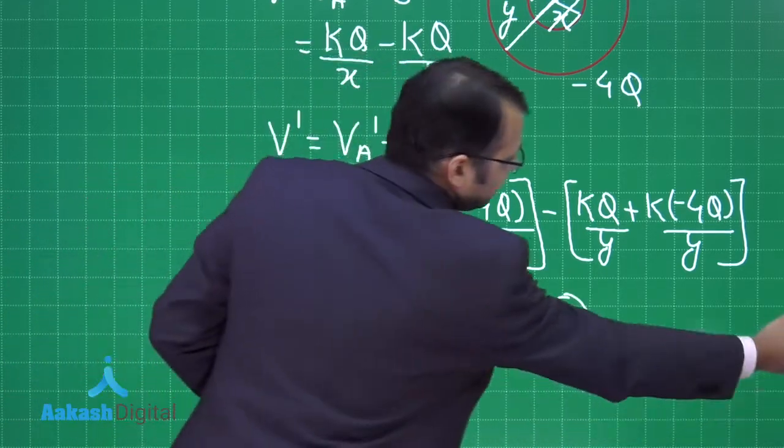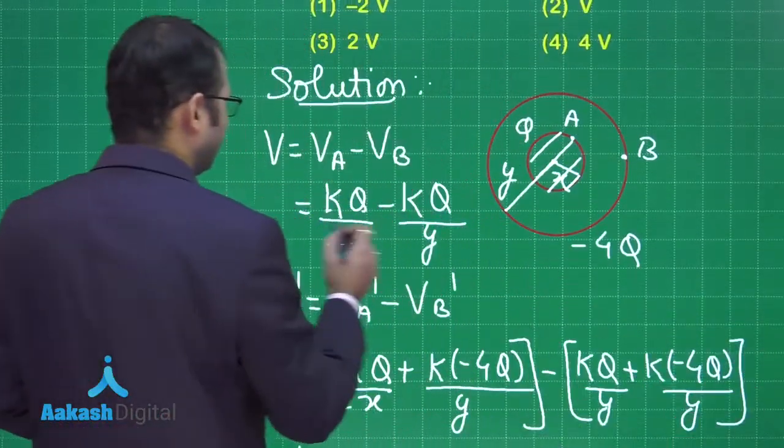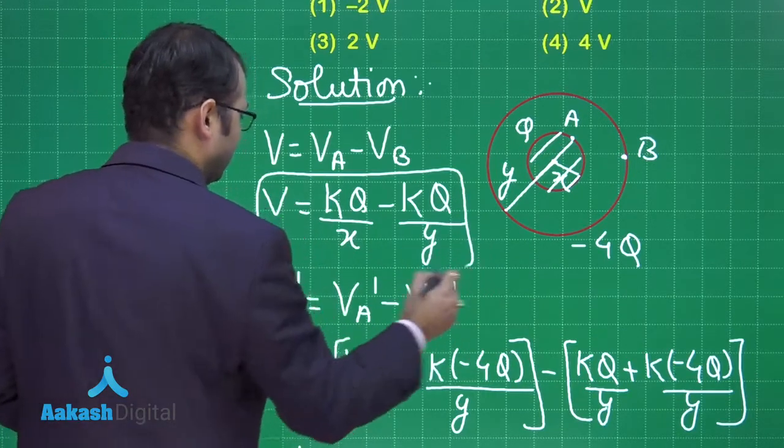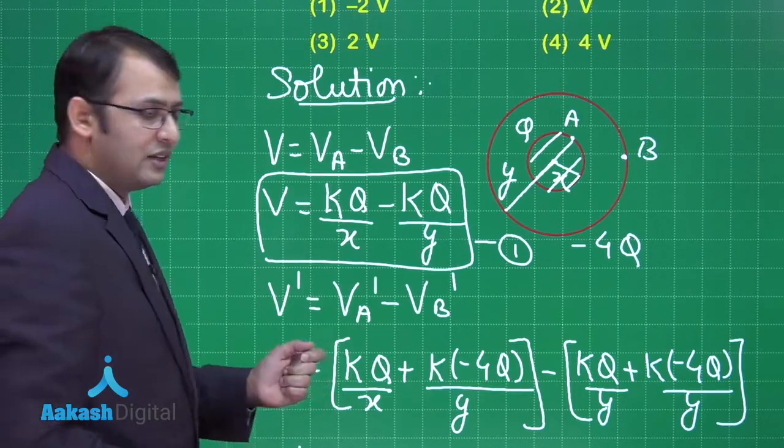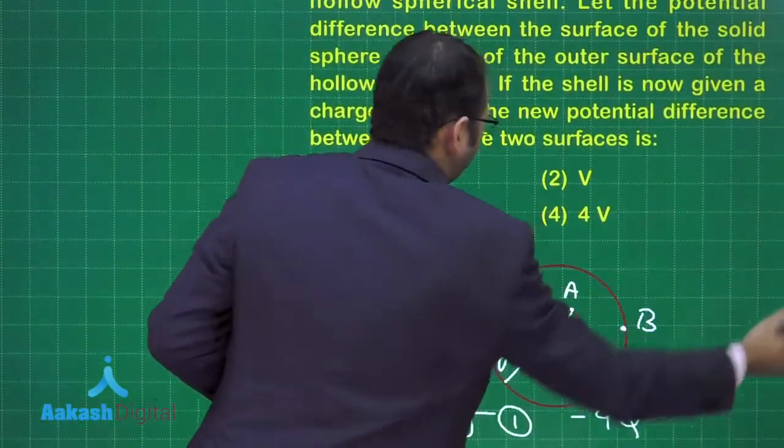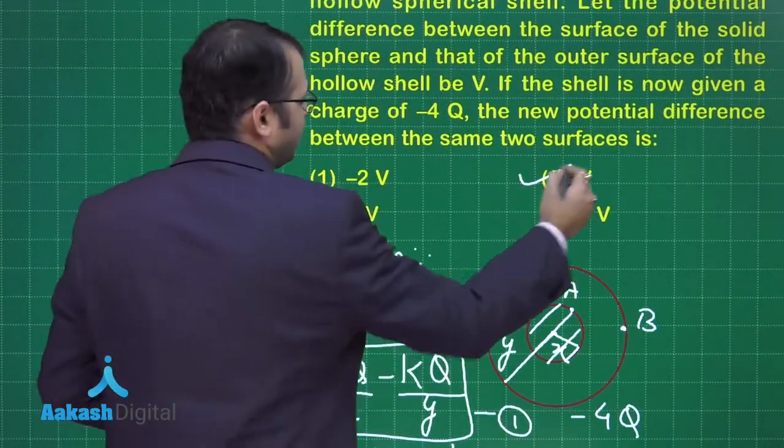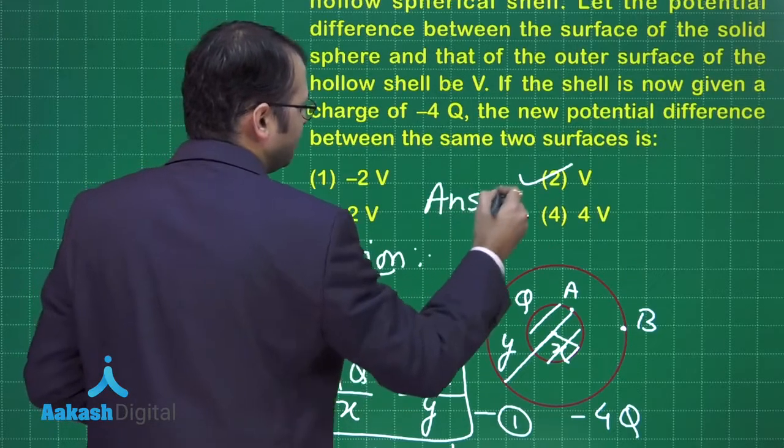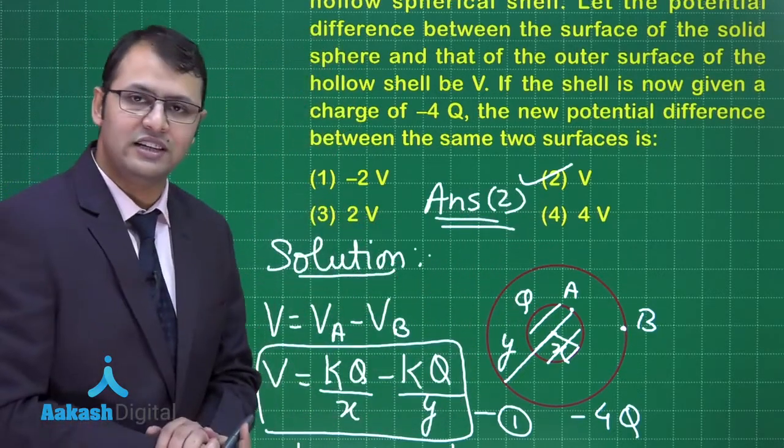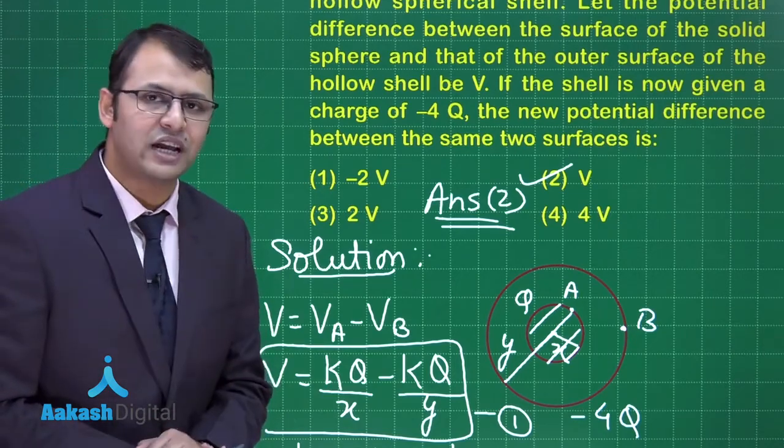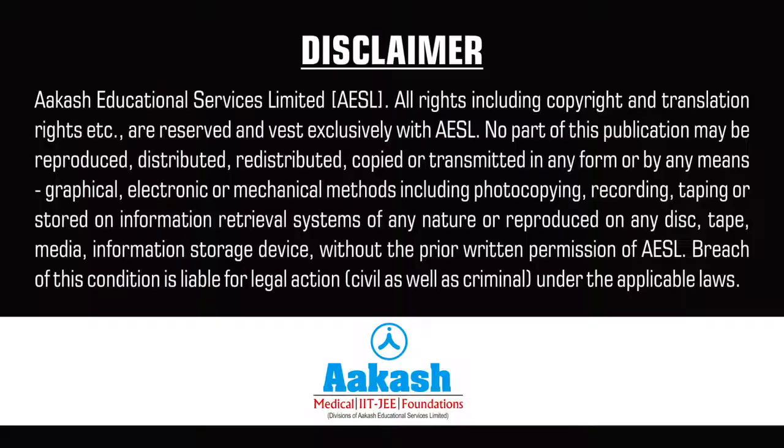When you compare the two equations, the second equation and the first equation, the answers to both are the same. That means among the four options, option number 2 is the right answer to this question. I hope you have understood this one easily. Now let's move on to our next question, question number 25.